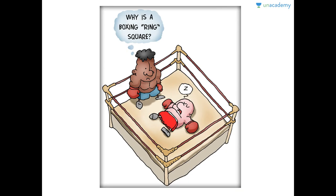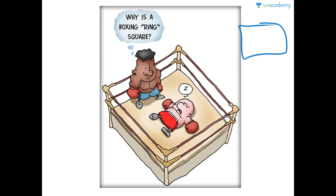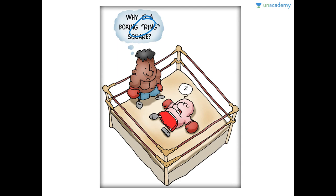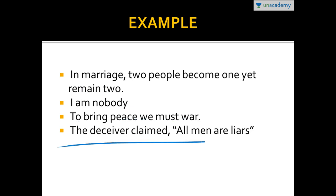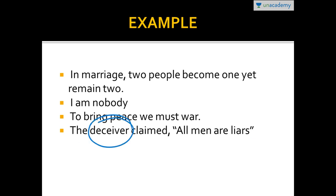For example: 'Why is this boxing ring a square?' A ring is usually round, but a boxing ring is actually square — so why is it called a ring? A few more examples of paradox: 'In marriage, two people become one, yet remain two.' 'I am nobody — if you are nobody, how can you be I?' 'To bring peace, we must war.' 'The deceiver claimed all men are liars' — how can we trust the deceiver that all men are liars?